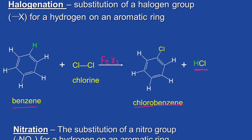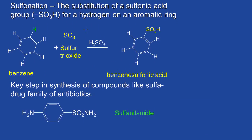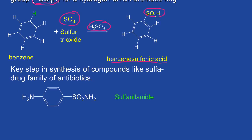Finally we're going to look at two more reactions. Sulfonation is where a hydrogen is substituted by a sulfonic acid group. We use sulfur trioxide and sulfuric acid, and then the sulfonic acid group replaces one of the hydrogens on the ring — the product is benzene sulfonic acid. This is a really important reaction because it is a key step in the synthesis of sulfa drugs, which we know are used as antibiotics.